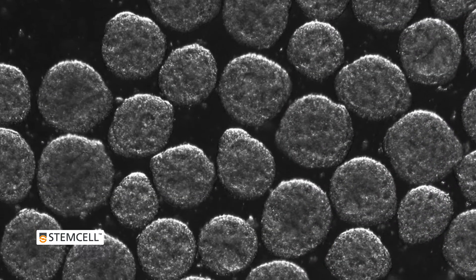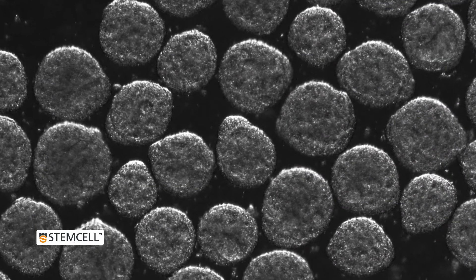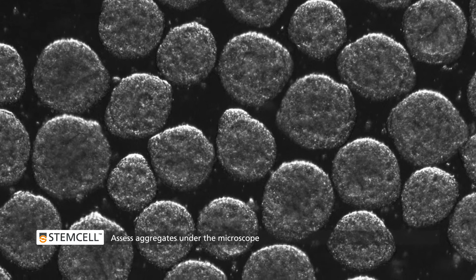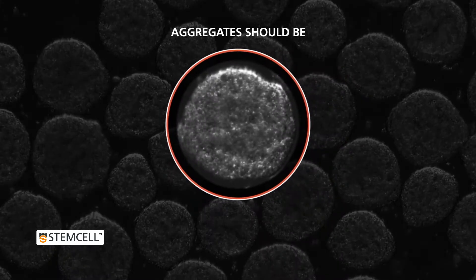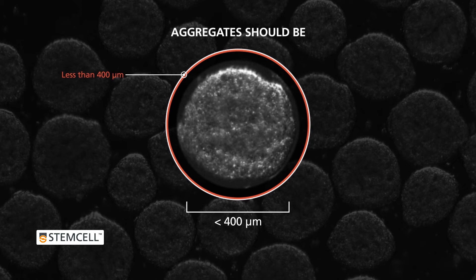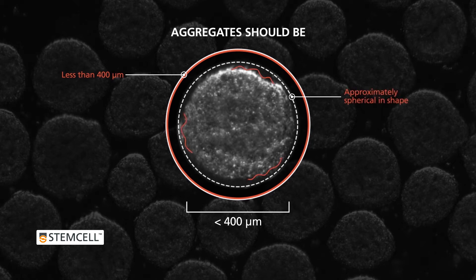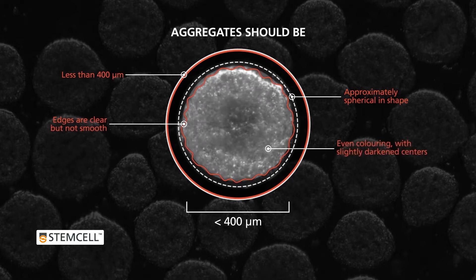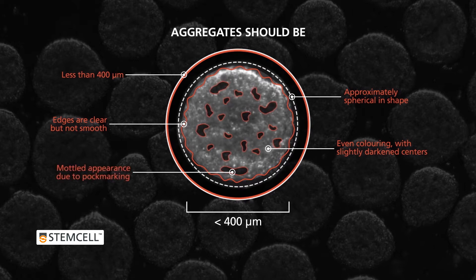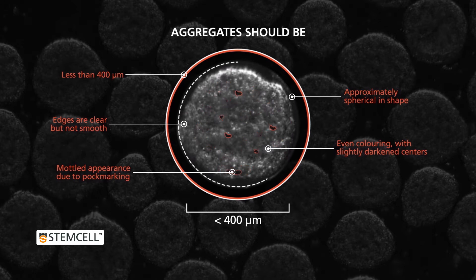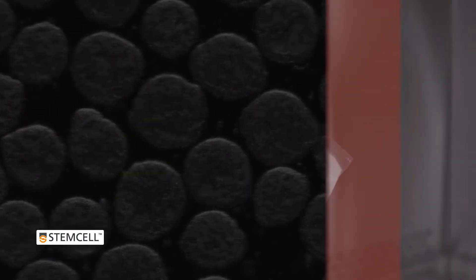When the HPSC suspension cultures are ready to passage, assess the aggregates under the microscope. Aggregates should be less than 400 microns in diameter and should display approximately spherical shape, edges that are clear but not perfectly smooth, even colouring with slightly darker centres, and a mottled appearance. Shallow craters or POC markings are normal and are a sign of maintenance of PSC marker expression.